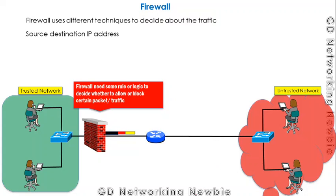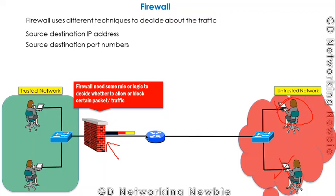For example, we can configure the firewall to allow traffic from certain users and block others by assigning IP addresses — similar to an ACL (access control list). We can use destination addresses, source addresses, as well as port numbers.